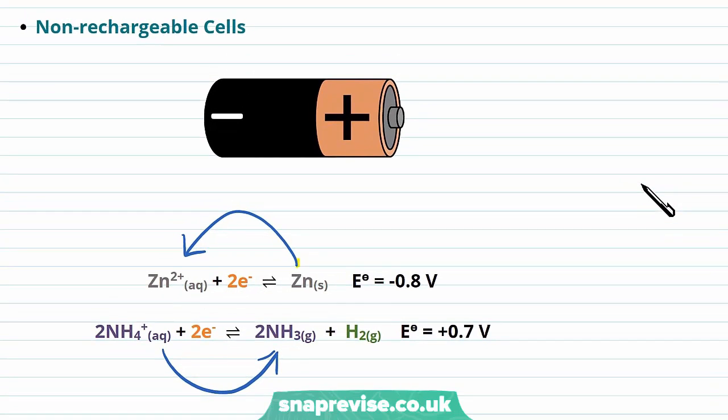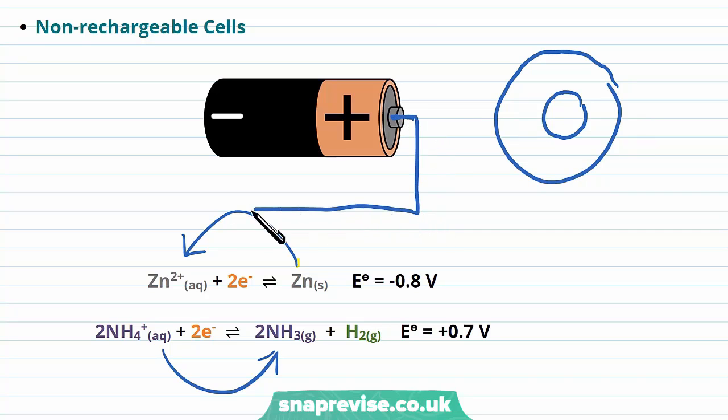The way these cells work is to effectively have one of the half cells in a central ring in the middle of the battery and the other of the half cells on the outer end of the battery. When they're put in a device there is then a connection between the positive end, the connection to the positive terminal, and the negative end, the connection to the negative terminal.